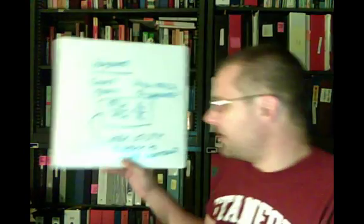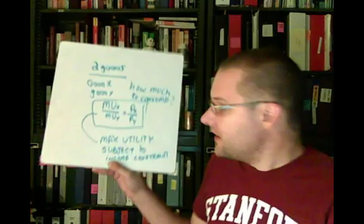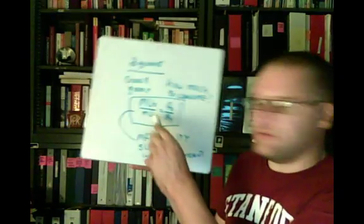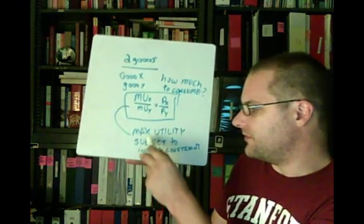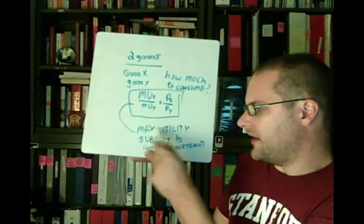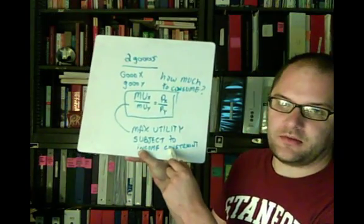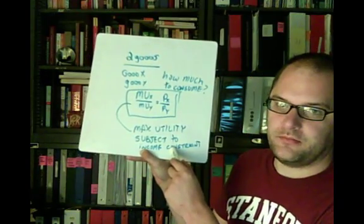In the second part of this video, I basically want to return back to this rule and prove to you that this must be the case — that this rule must be true if we're maximizing utility subject to my income constraint. We're going to do this in three steps.